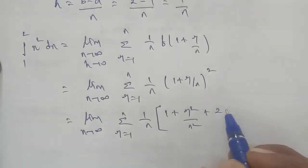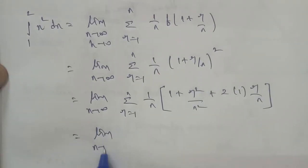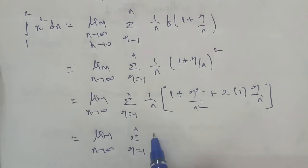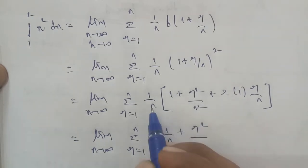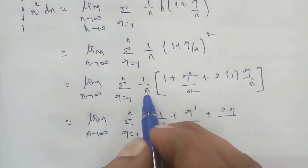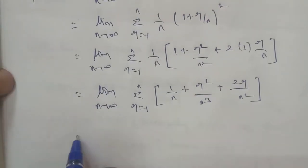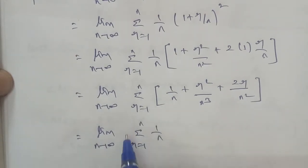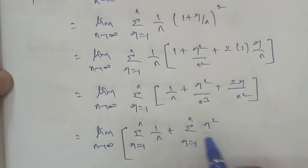Expanding the square using the formula (a+b)² = a² + 2ab + b², we get 1 squared plus 2 times 1 times r by n plus r by n squared. So the expression becomes limit n to infinity sigma r equals 1 to n, and 1 by n times the expanded terms.